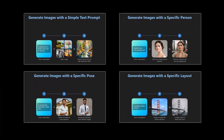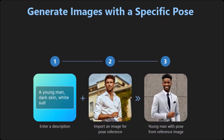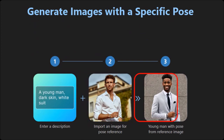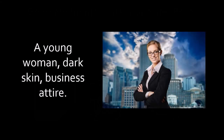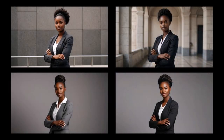In the third example, which is text-to-pose, you write a text prompt to describe the person, then you upload an image of a specific pose, and then PhotoDirector generates the image based on that criteria. In this example, I used another basic prompt, I uploaded an image with a pose, and then these are the images that were generated by PhotoDirector.